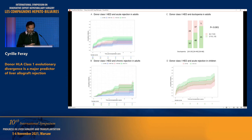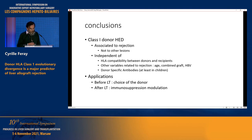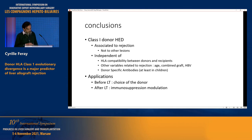In conclusion, donor class 1 HED was associated with rejection but not with other lesions. It was completely independent of HLA compatibility between donors and recipients, and independent of all other variables related to rejection — including young age, combined graft, HBV infection, and donor-specific antibodies, at least in children. This is a completely new biomarker, dependent only on the donor, not on matching.